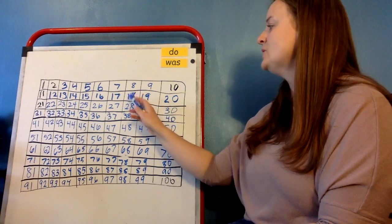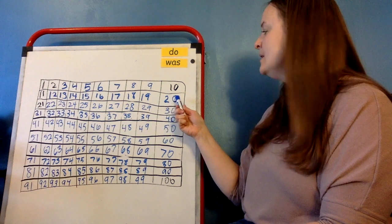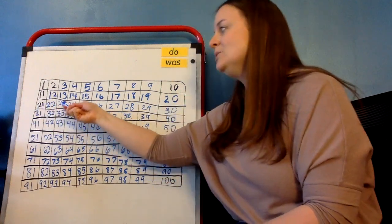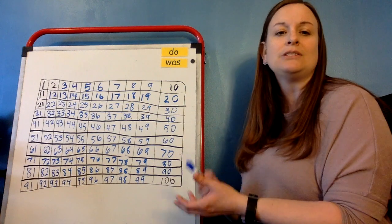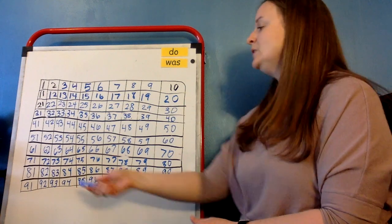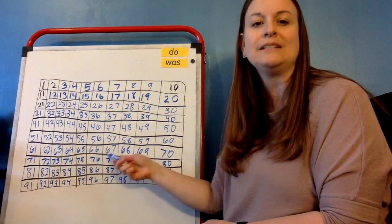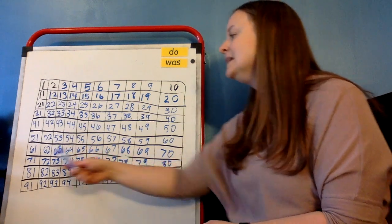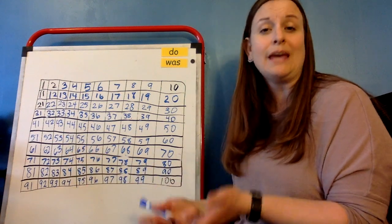So looking at this hundreds chart, you would just start at 18 and you would say 18, 19, 20, 21, 22, 23, 24, 25 till somebody asks you to stop. If I say start at 63 and keep going, you would just come here, 63, 64, 65, 66, 67, 68, 69, 70, 71, 72, 73. So that's what's called counting on.